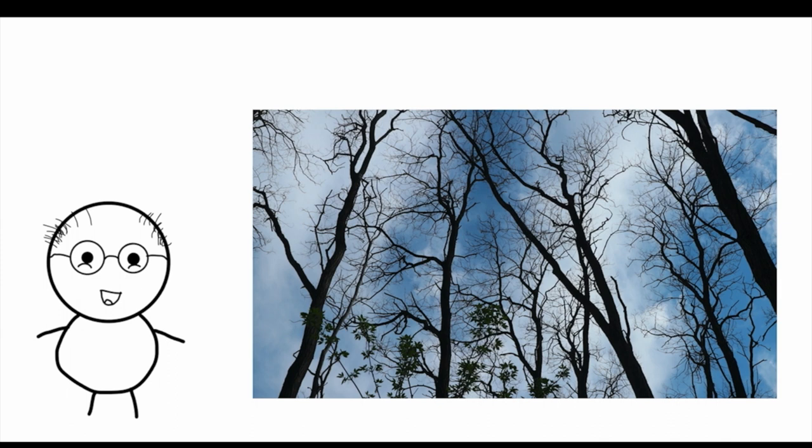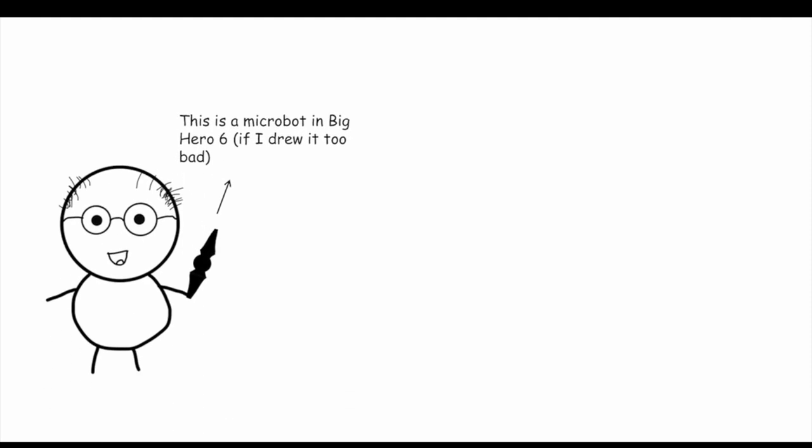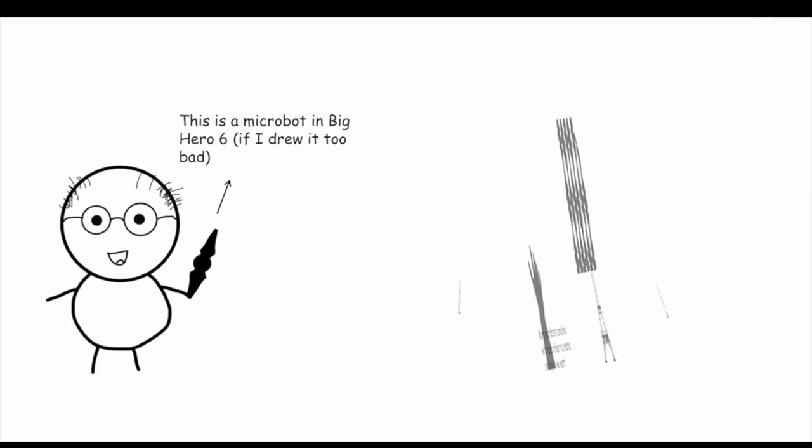That rule is a whole set of similar or identical patterns being repeated — just like the microbots in Big Hero 6. With many tiny microbots attached to each other, they can make a hand, an Eiffel Tower, or anything. So it turns out that things that seem not to make sense really have their own sense.